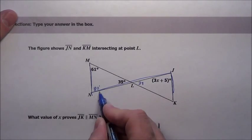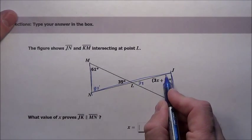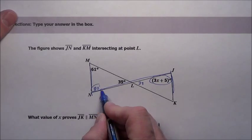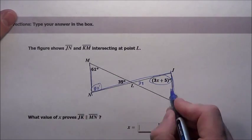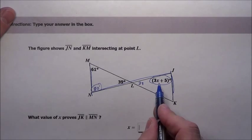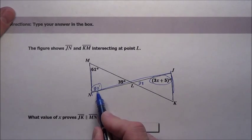You can see right away that what we have is this right here and that right there. Those are the Zmeister. The Zmeister, yeah, the alternate interior angles. That 3x plus 5 is going to have to equal 80 degrees.